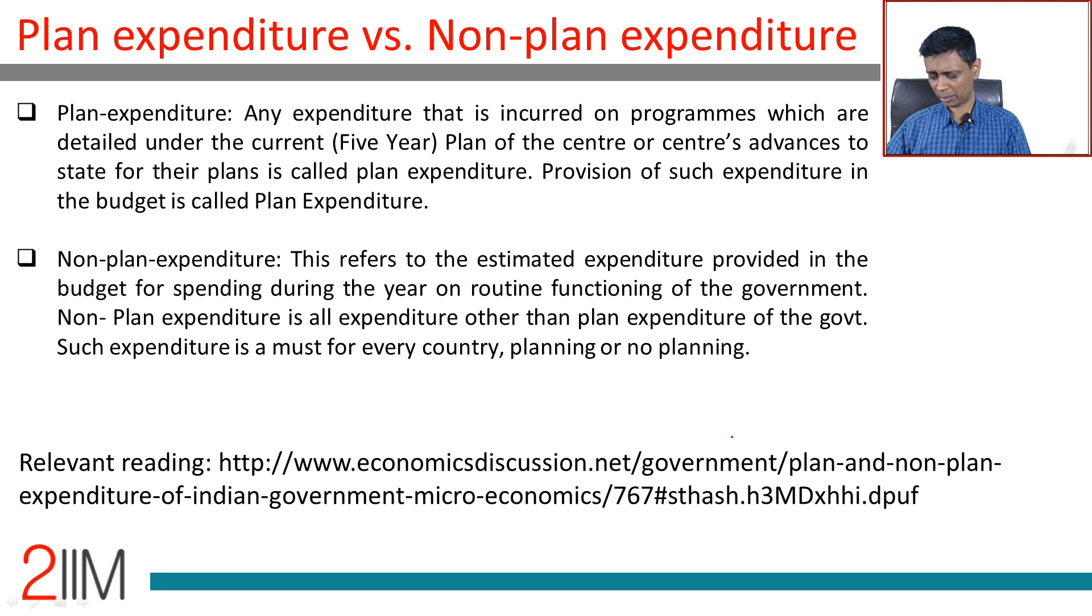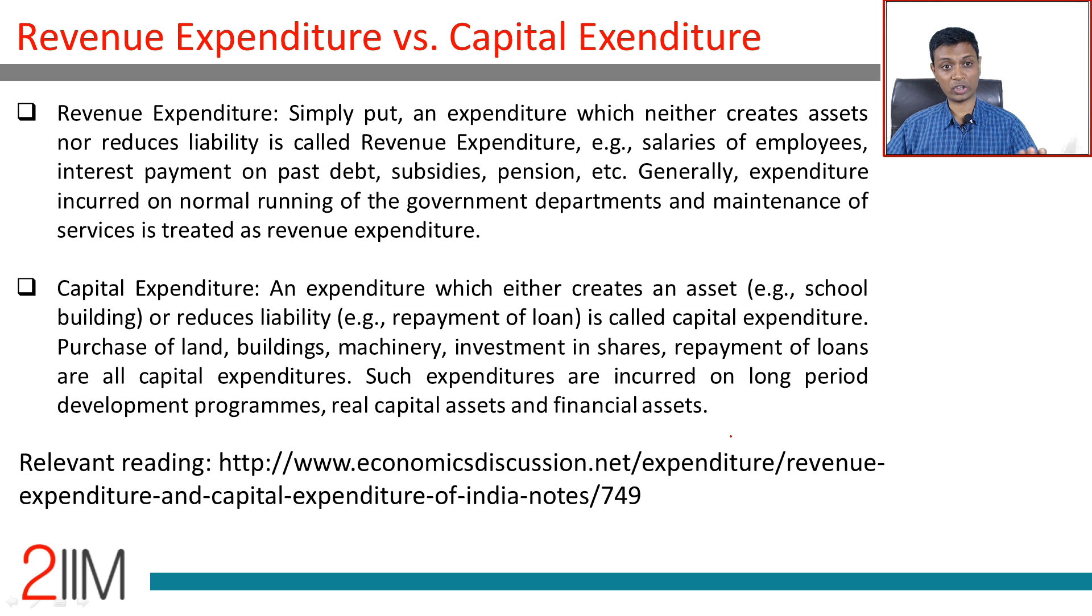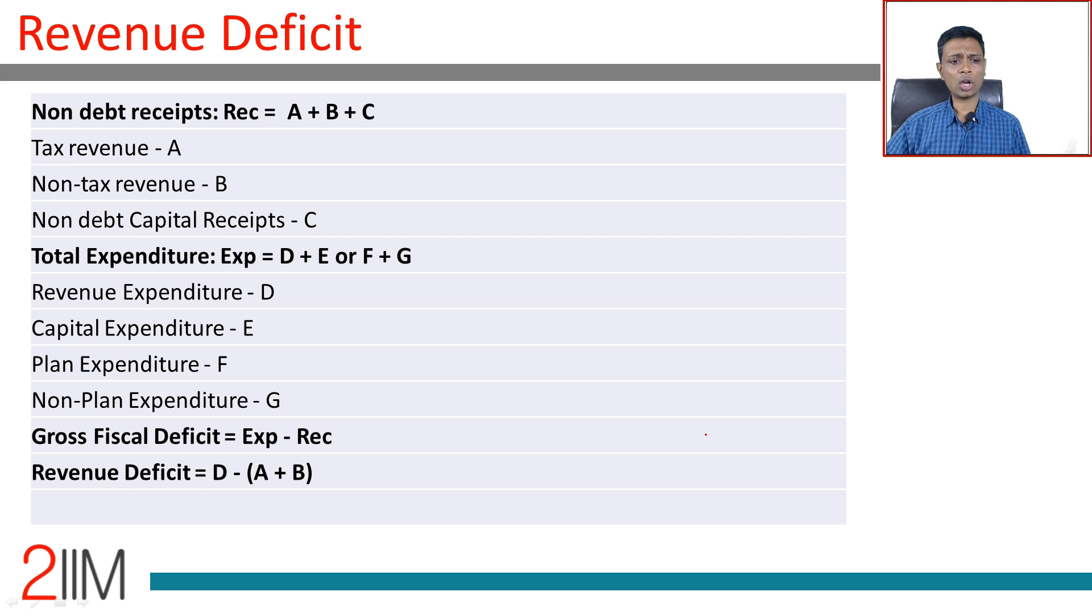Planned and non-planned - the entire nomenclature is being removed. Revenue expenditure and capital expenditure, we have already covered. Now we are going to talk about this term called revenue deficit. Revenue deficit: revenue expenditure minus A plus B, so D minus A plus B is revenue deficit. Very important number, probably more important than fiscal deficit.